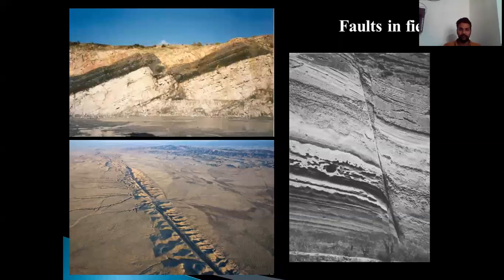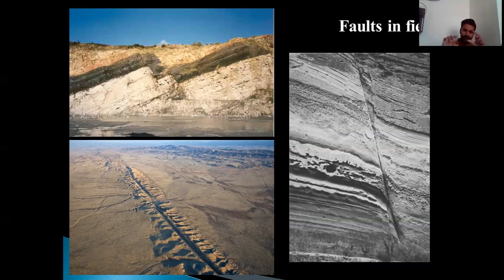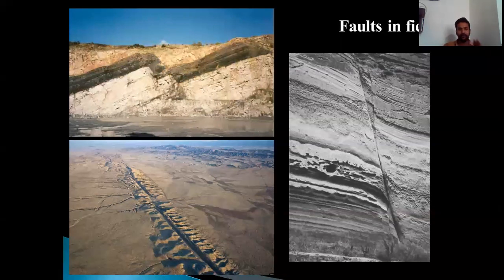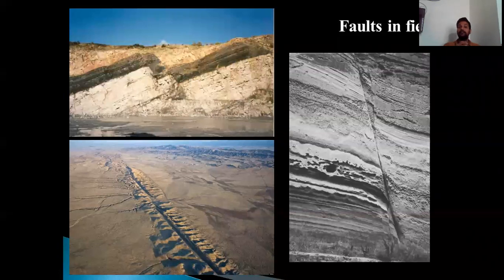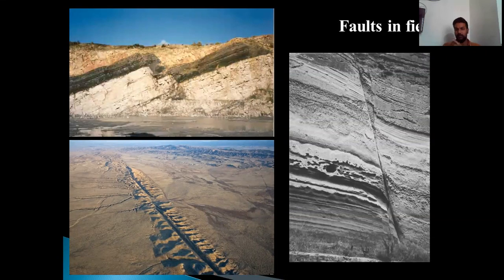Let us see some examples of faults in the field. These well-known examples show that faults can range from a smaller scale to a much bigger scale. In the first picture you can see how two blocks — indicated by the black color band — are separated from each other; initially before faulting they would have been connected. The second picture shows the San Andreas fault, which extends up to approximately 500 kilometers, making it one of the biggest faults on the Earth's surface. The third picture shows another example of a field fault. Faults are easily observable in the field.